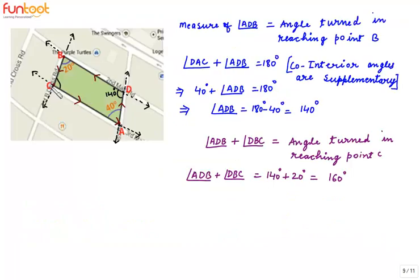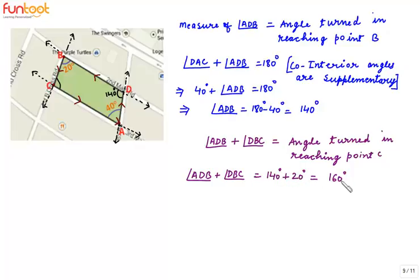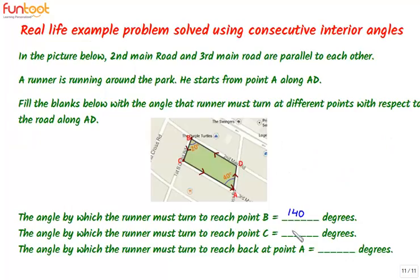In the next part, we find the angle turned in reaching point C, which equals angle ADB plus angle DBC. We already found angle ADB = 140°, and angle DBC is given as 20°. Adding the two: 140° + 20° = 160°. So in the second fill-in-the-blank, we write 160°.